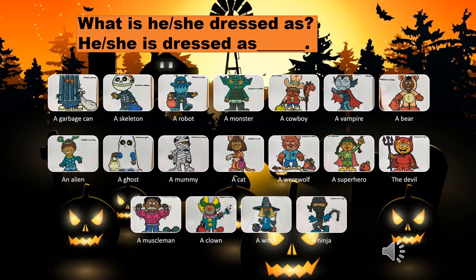He is dressed as a ghost. Next: 'what is he dressed as?' He is dressed as a mummy — or 'the mummy.' Next, it's a she: 'what is she dressed as?' She is dressed as a cat. Meow. Next, it's a he: 'what is he dressed as?' He is dressed as a werewolf. Next, it's a she: 'what is she dressed as?' She is dressed as a superhero.